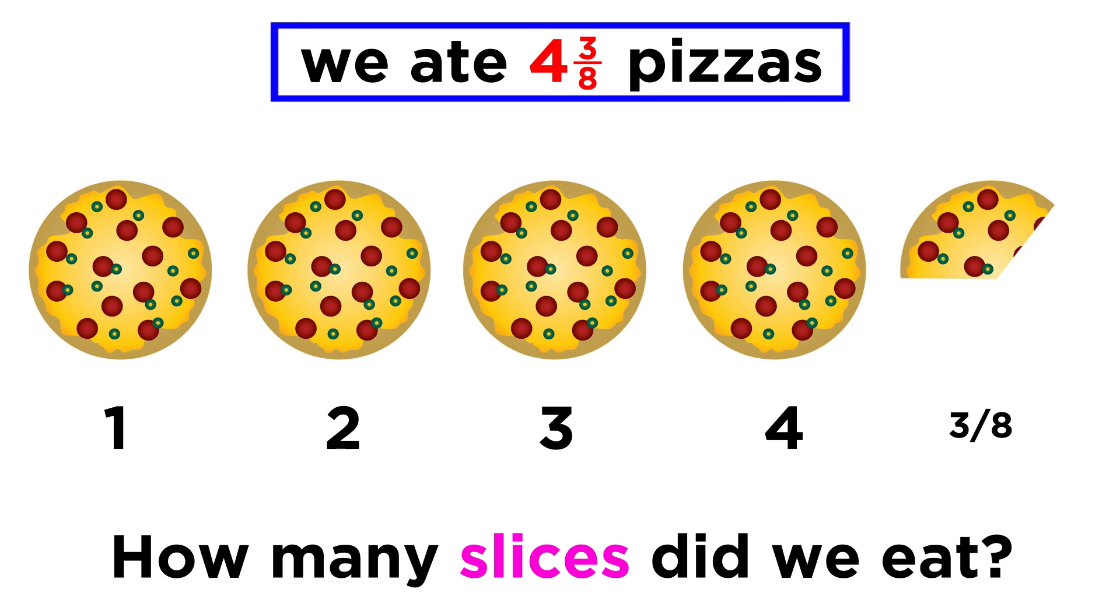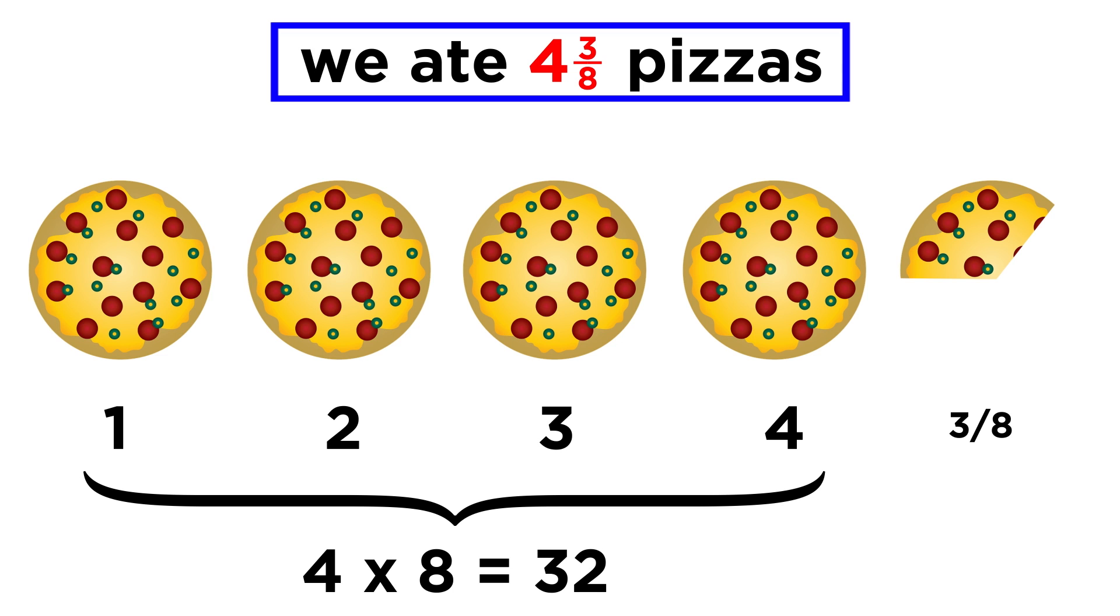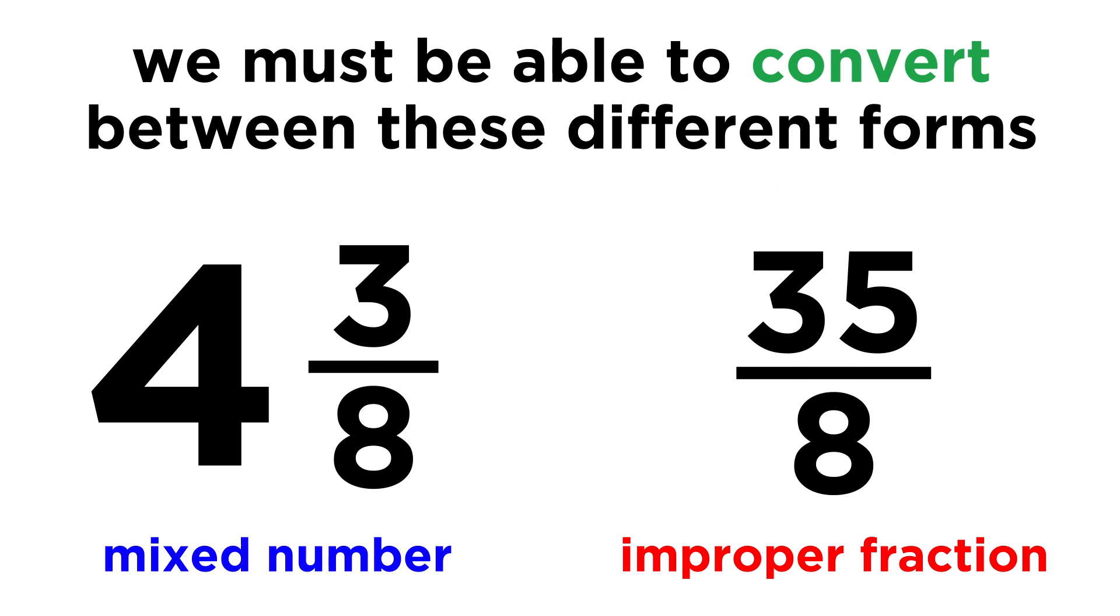We could also go the other way. Say that we ate four and three eighths pizzas. So how many slices did we eat? Well each pizza has eight slices, so we multiply the four by eight to get thirty-two. Then we add on the remaining three, and we get thirty-five slices. We should be able to convert between improper fractions and mixed numbers in this fashion.